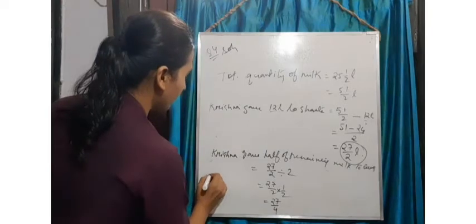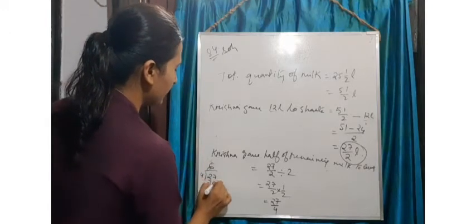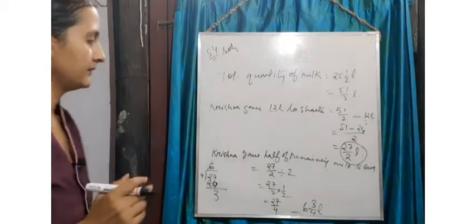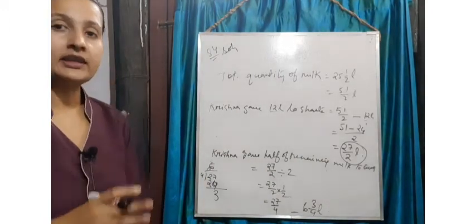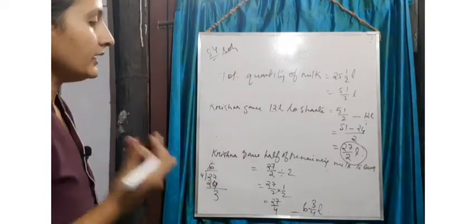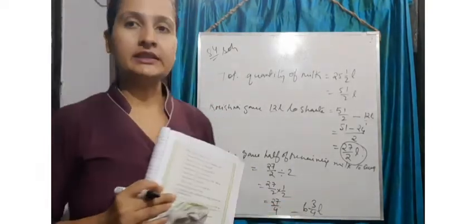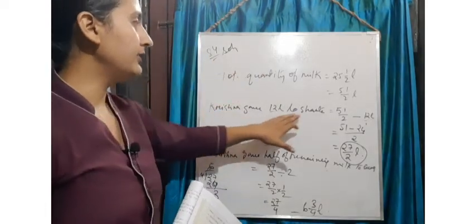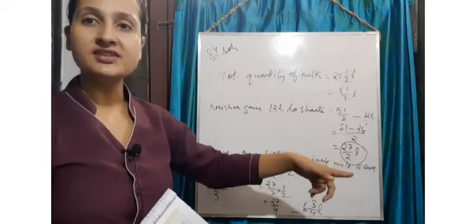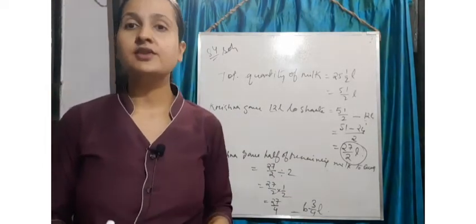So twenty-seven by four — four sixes are twenty-four, remainder three — that gives us six and three by four litres. So Suman got six and three by four litres of milk, which is half of twenty-seven by two. In the book the answer given is not correct — there is a printing mistake — the correct answer is six and three by four litres. Krishna gave twelve litres to Santa, then we deducted that from the total, and then divided the remaining milk by two to find Suman's share. I hope that is clear.